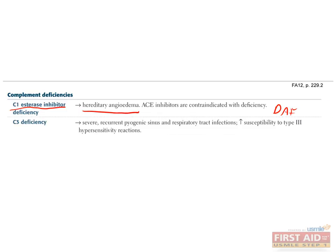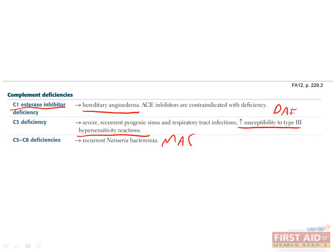A deficiency in C3 results in recurrent sinus and respiratory tract infections and an increase in susceptibility to type III hypersensitivity reactions. This makes sense when you understand the role of C3b in clearing immune complexes. Deficiencies in C5 through C8, which form the membrane attack complex, lead to recurrent Neisseria infections.